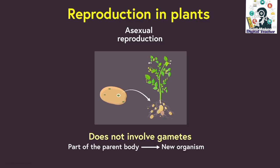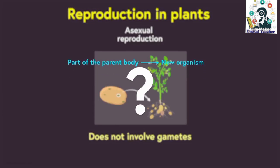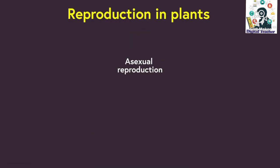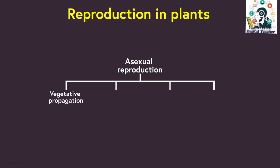However, which part of the parent body will grow into a new organism? Based on various conditions, asexual reproduction is further classified into various types. These include vegetative propagation, fragmentation, budding, and spore formation. We will understand the details of these several types as we go along in this video.